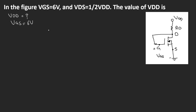If you see in the figure, the gate terminal and the drain terminal are connected together — they are shorted out. So the gate terminal and the drain terminal are at the same potential. Also, the source is grounded, so we have Vs equal to 0, which implies that Vgs is equal to Vg minus Vs, and because Vs is 0, Vgs is equal to Vg.